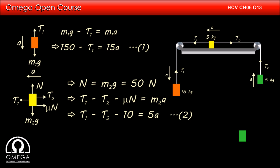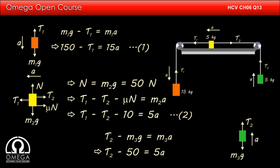Finally, let us draw the free body diagram of the third block. If its mass is denoted by m3, gravitational force m3g is pulling it downward, tension T2 in the string is pulling it upward, and the block is moving with acceleration a in the vertically upward direction. Writing the equation of motion in the vertical direction, we get T2 minus m3g equals m3a. Putting the values, we get T2 minus 50 equals 5a.